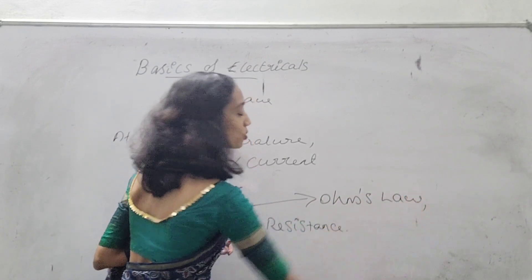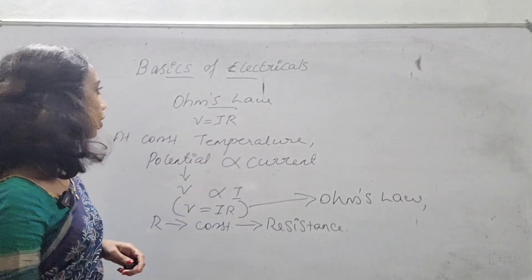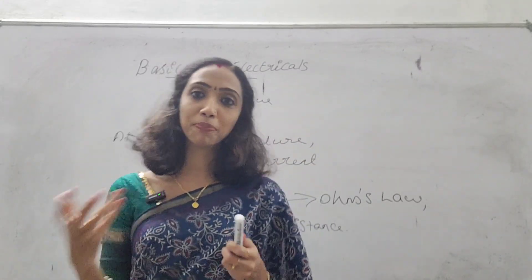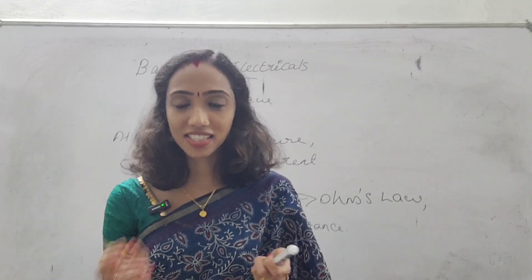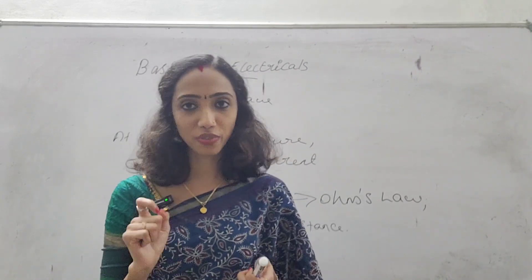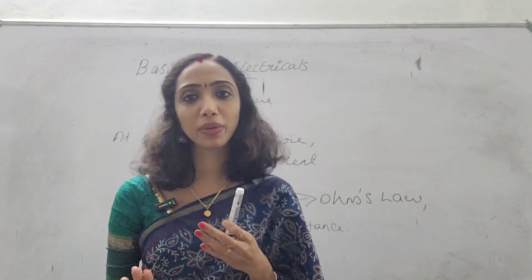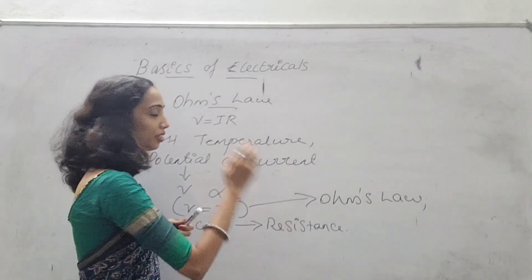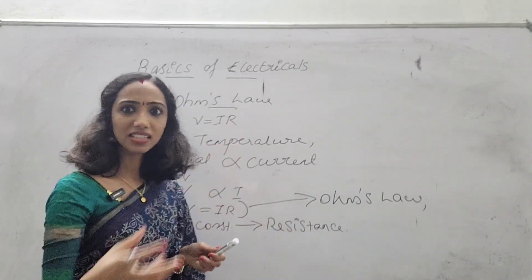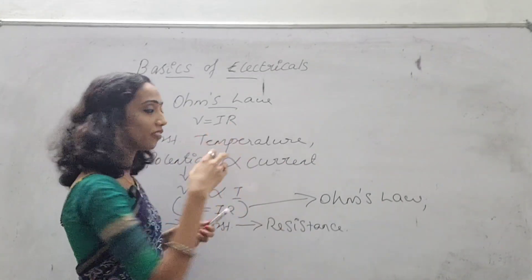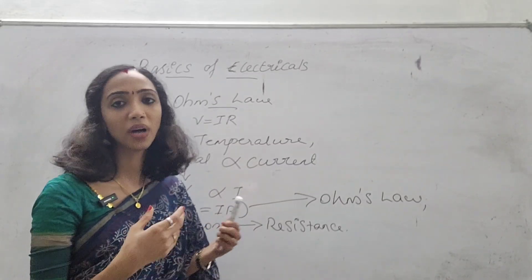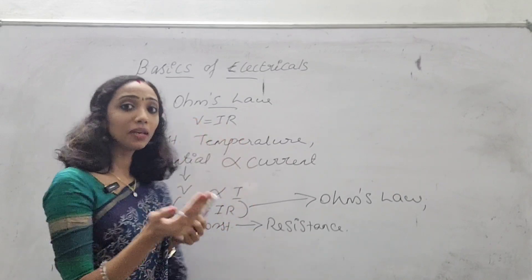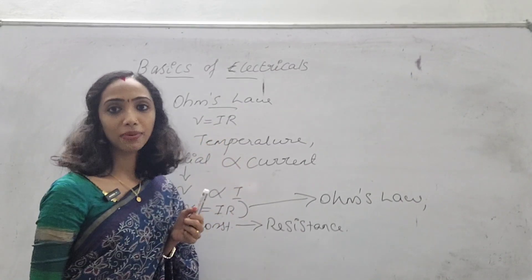This is what we call Ohm's Law: V is equal to IR. In my channel, electrical videos are posted — DC machines, generators, and all these videos. There are two equations in the complete electrical system. V is equal to IR, and power is equal to V into I. That is the Ohm's Law, defined at constant temperature.